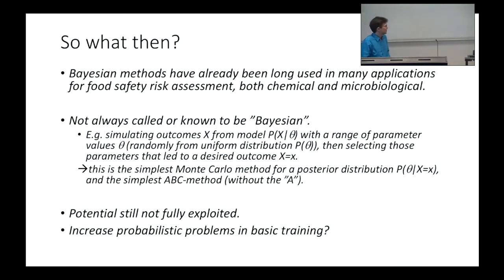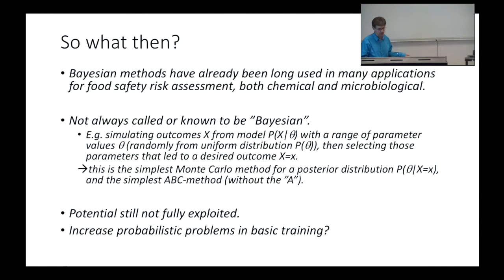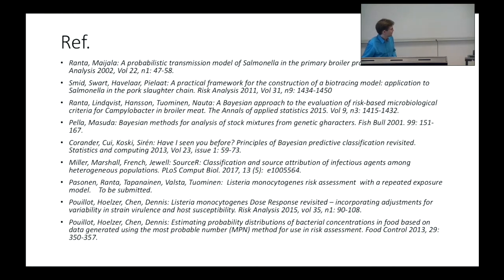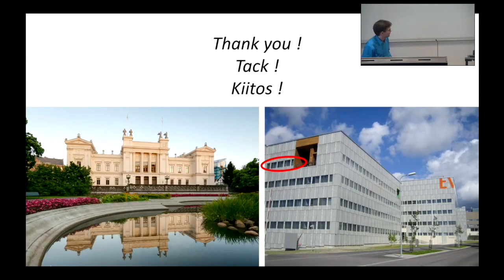To conclude: Bayesian methods have been used in many applications of food safety risks for a long time, but not always known or called Bayesian. I've seen papers that do simulations actually equivalent to calculating a posterior distribution, but they don't describe it as Bayesian estimation — yet when you see how it's done, it's actually just what it is. I think there's still more potential in Bayesian methods, and maybe we just need to increase some Bayesian training. Here are some references if you're interested in the examples I showed you. Thank you.